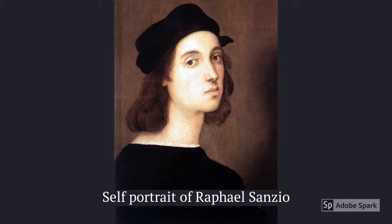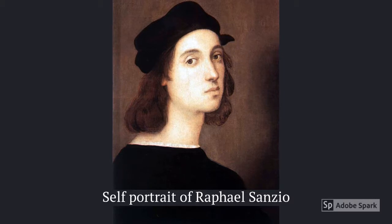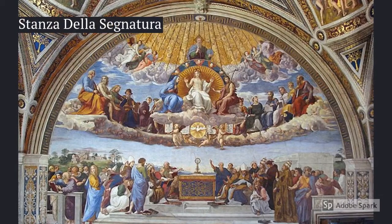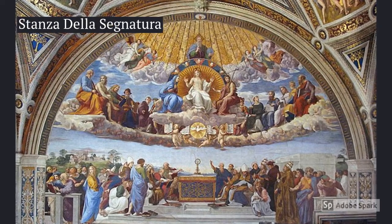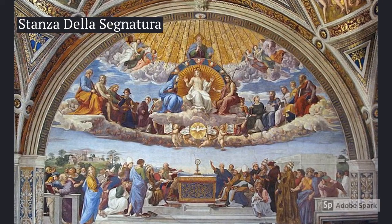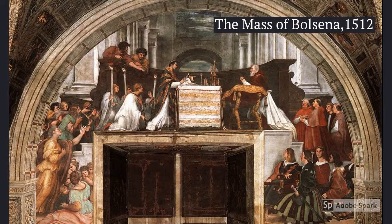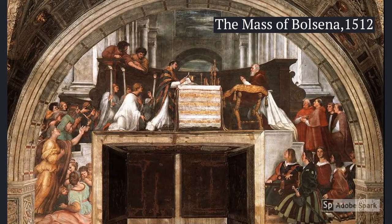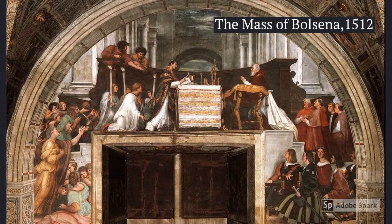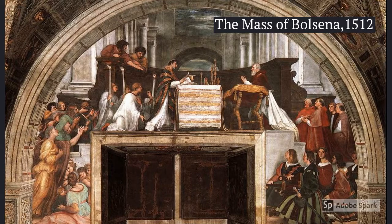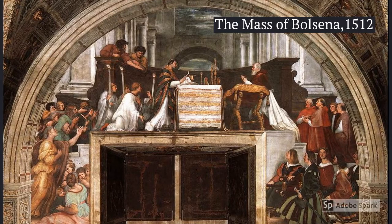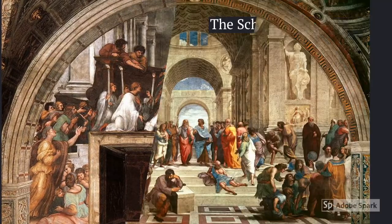Rafael Sanzio was an Italian Renaissance painter and architect who started working with Michelangelo and Leonardo da Vinci. Later, Rafael was called by Pope Julius II to work in the Vatican. Rafael Sanzio also painted the Stanza della Signatura, as well as the Messa di Bolsena, which was a fresco painted between 1512 to 1514, now known as the Raphael Rooms in the Apostolic Palace in the Vatican.